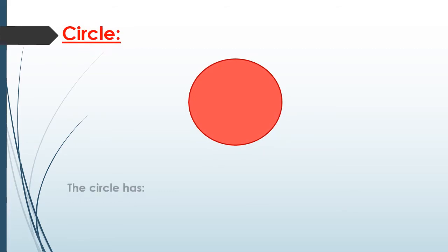Who can tell me what the name of this shape? It's a circle. The circle has no lines, so it has no sides and no vertices.